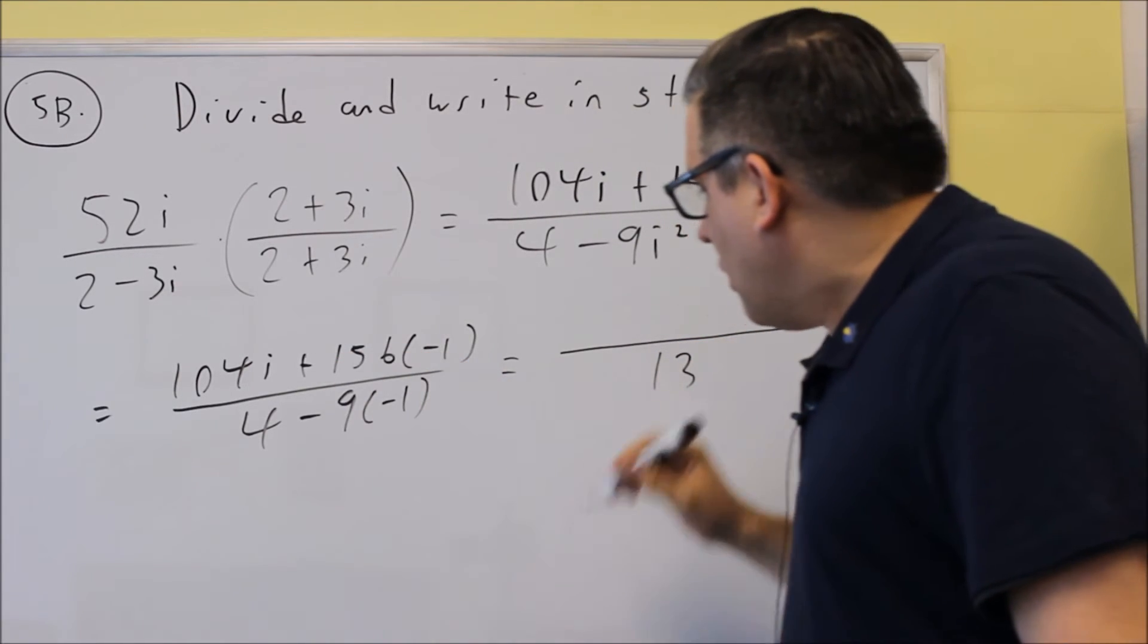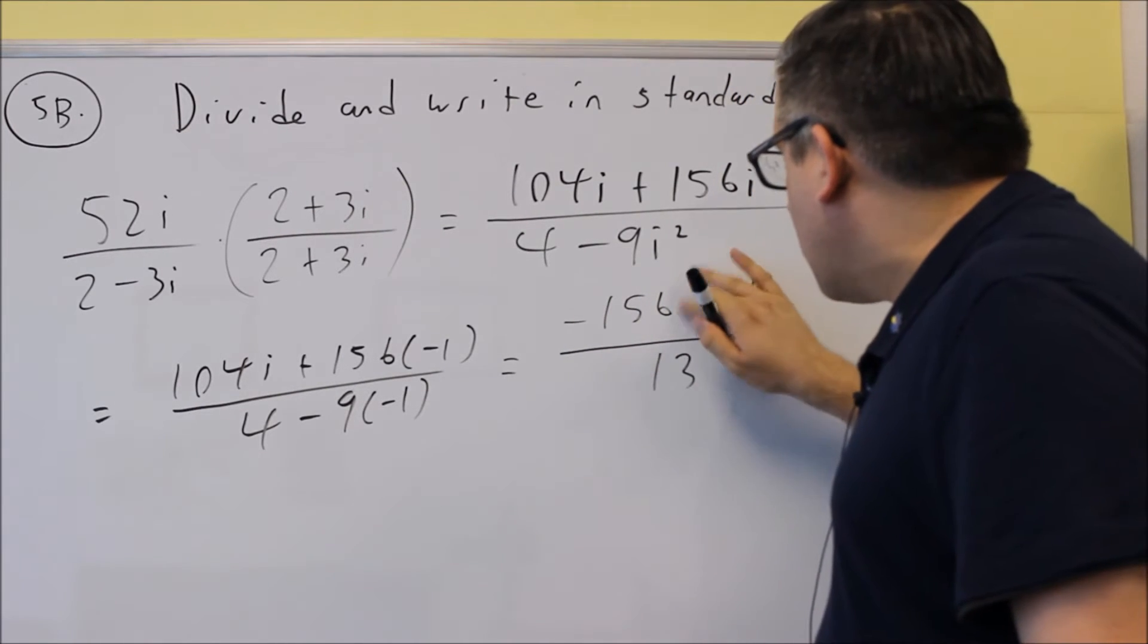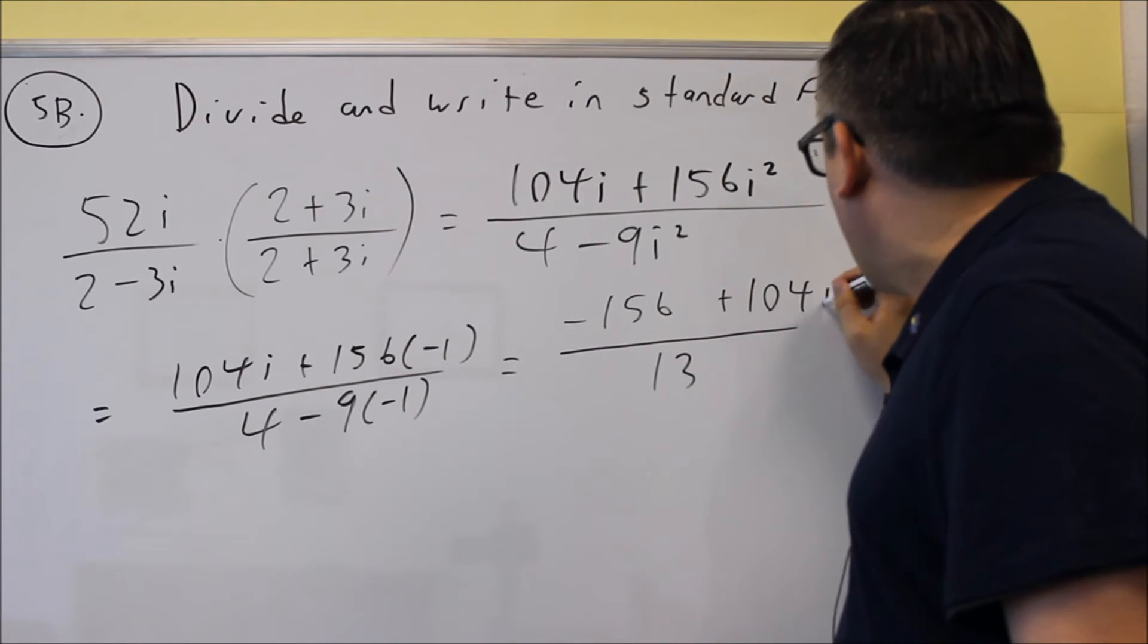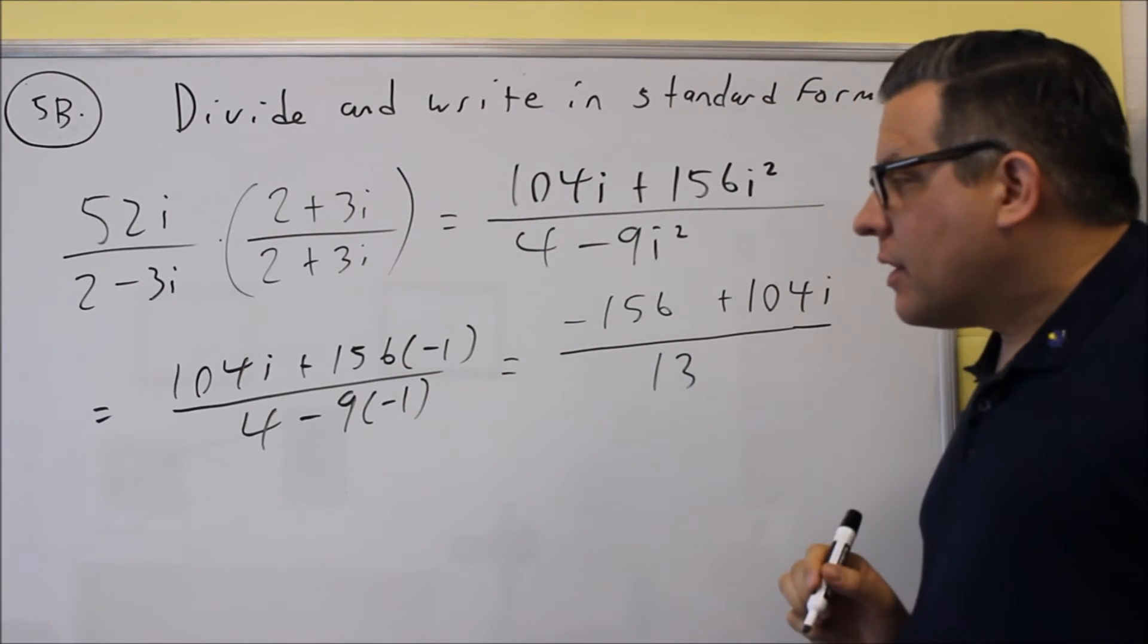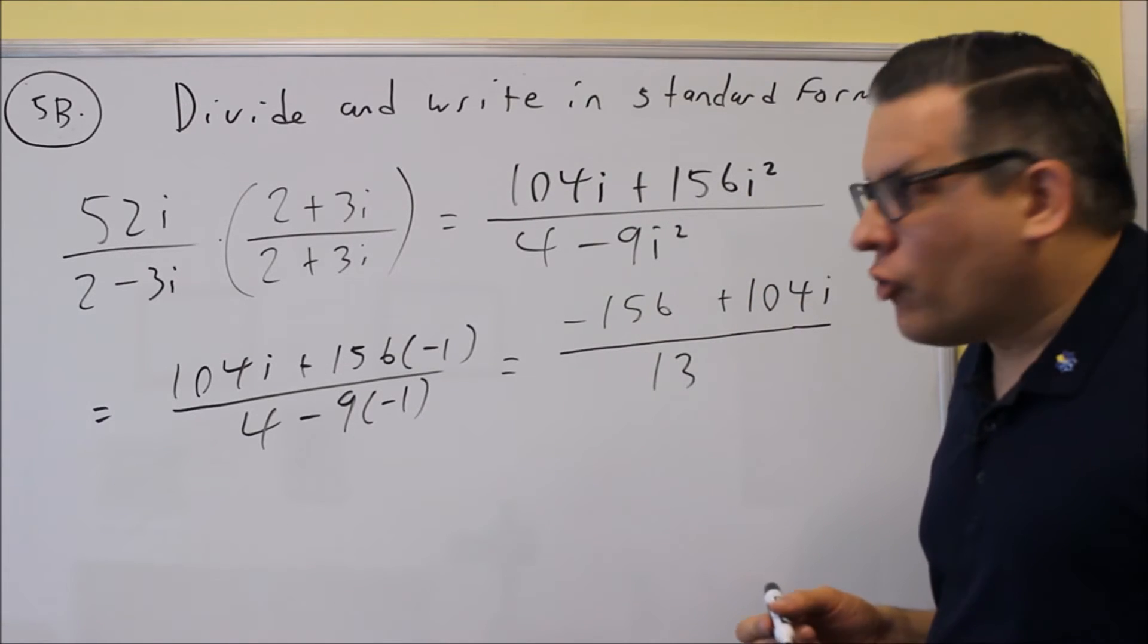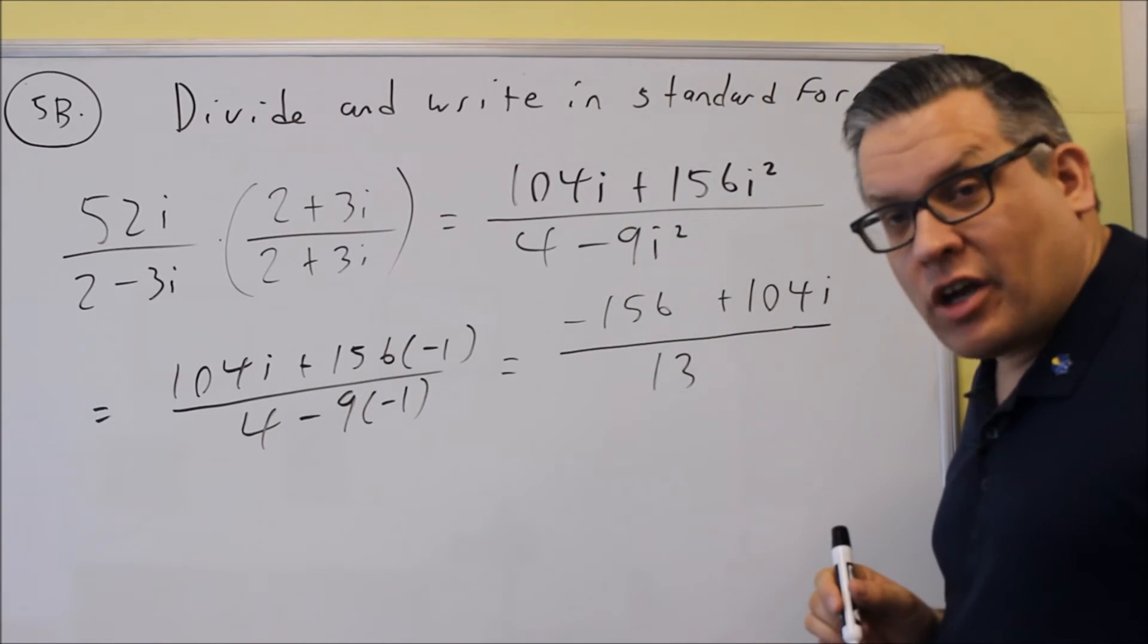Now on top, what I'm going to do is I'm going to switch the order of these. So I get negative 156 when I multiply that, and then this is going to be 104i. I switch the order because ultimately I want to put this in standard form. The number part has to come first and the i part has to come second.